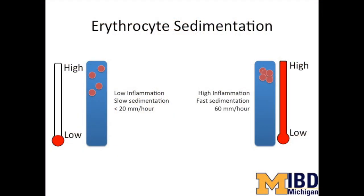The ESR is a measurement of how fast your red blood cells, or erythrocytes, sink in a test tube filled with water. The red blood cells are normally negatively charged and sink slowly to the bottom of a test tube. However, if you have active inflammation, proteins in the blood called globulins and fibrinogen make the red blood cells stick together in clumps or stacks and sink, or sediment, much more quickly.